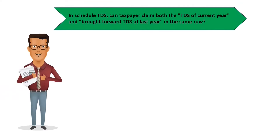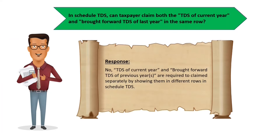Another question: in Schedule TDS, can the taxpayer claim both TDS of the current year and brought forward TDS of the last year in the same row? Please note that the TDS of the current year and brought forward TDS of previous years are required to be claimed separately by showing them in different rows in Schedule TDS.